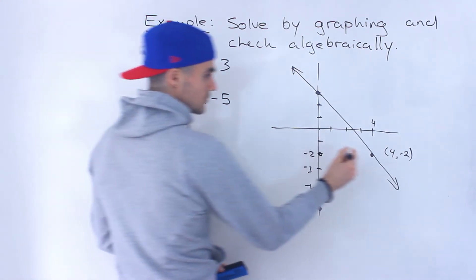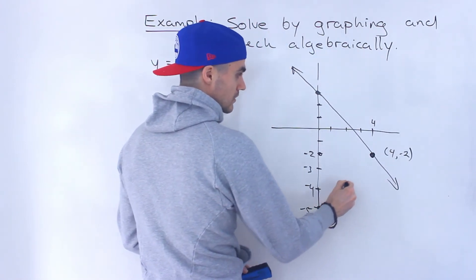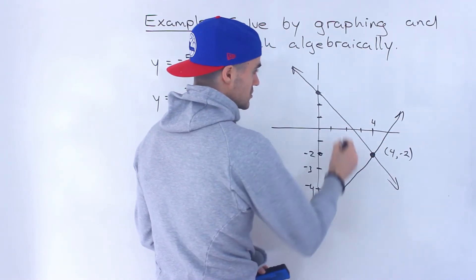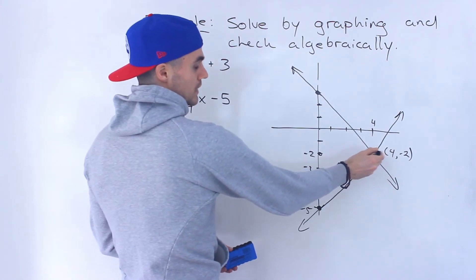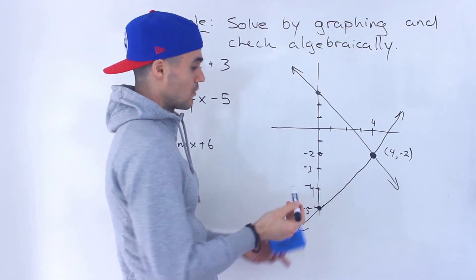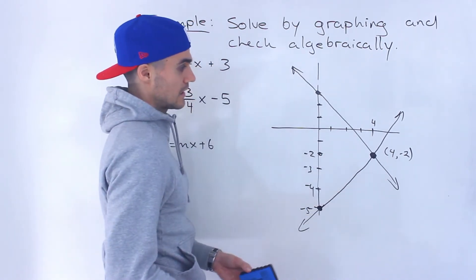And then we're going to run by 4. So notice, we end up getting that same point right there. So in this case, it worked out pretty nice. That first point that we graphed with the first line ended up being the first point that we graphed on the second line.